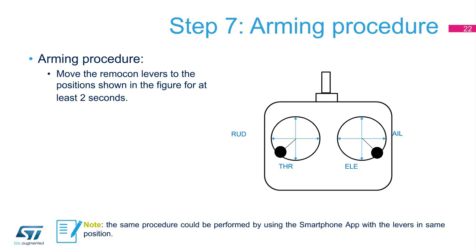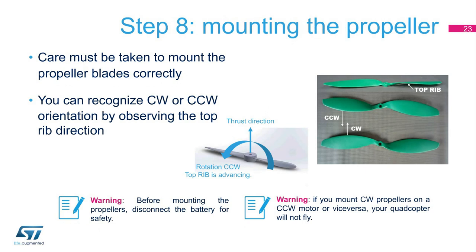Care must be taken to mount the propeller blades correctly. The propeller is designed according to Bernoulli's principle, where a positive thrust perpendicular to the rotation axis is achieved. When the top advances in the sense of rotation, you can recognize CW or CCW orientation by observing the top rib direction. CCW blades are also usually marked with an R for reversed.